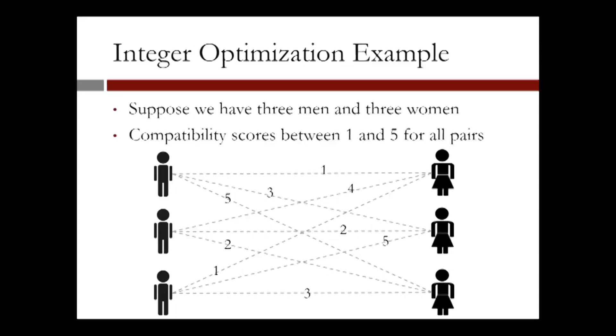For example, the first man and the first woman have compatibility score of one, the first man and the second woman have compatibility score of three, and so forth.